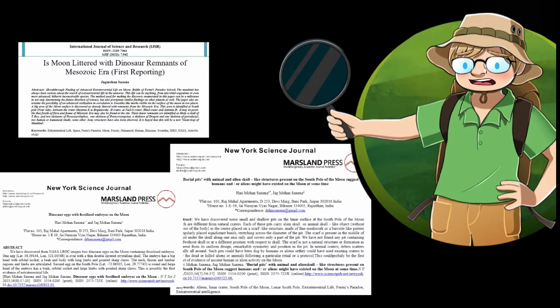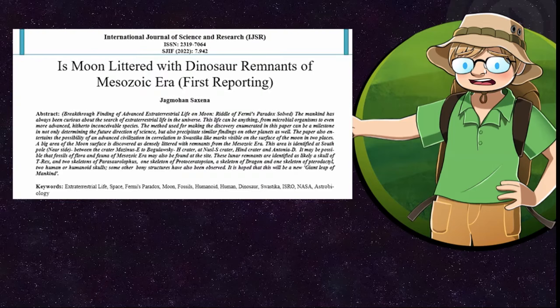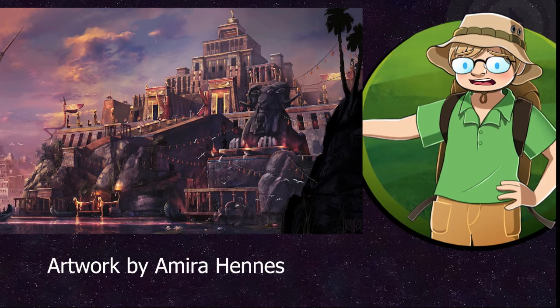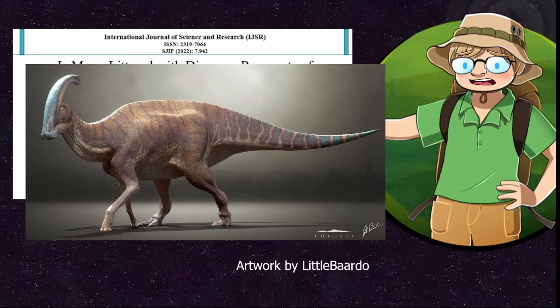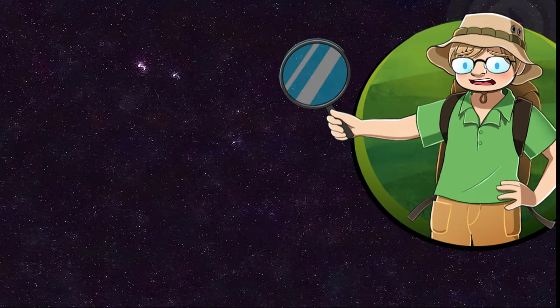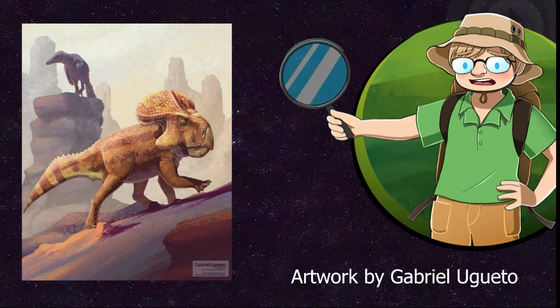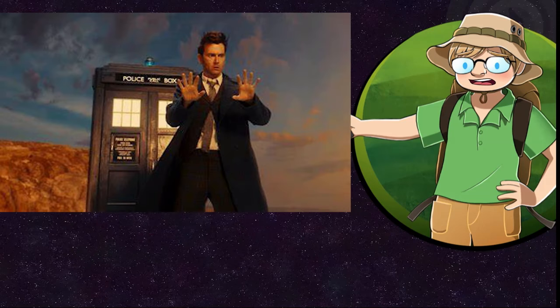In three papers published in dodgy predatory journals that clearly have no peer review process whatsoever. In the first of these papers, Saxena claims that he has found possible evidence for a past advanced civilization on the moon. In addition to a supposed T-Rex skull, two Parasaurolophus skeletons, a so-called pterodactyl skeleton, a literal dragon skeleton, a skeleton of Protoceratops, and the skulls of two humans or humanoid aliens.